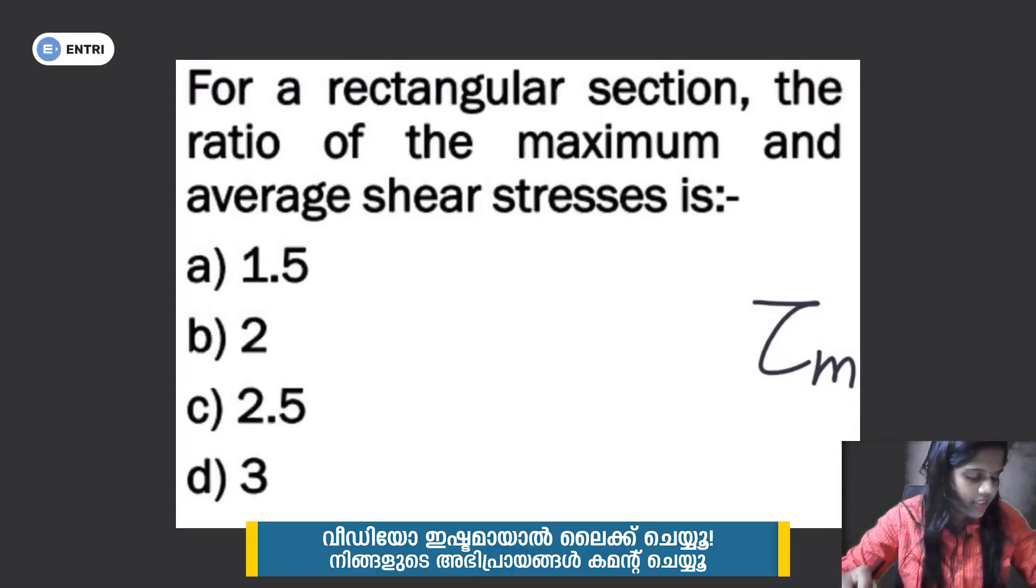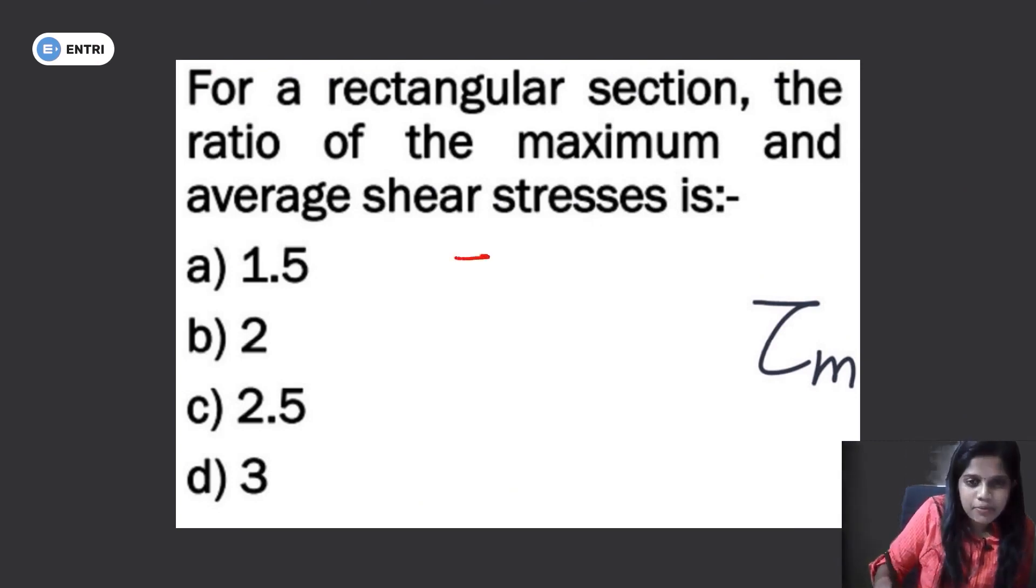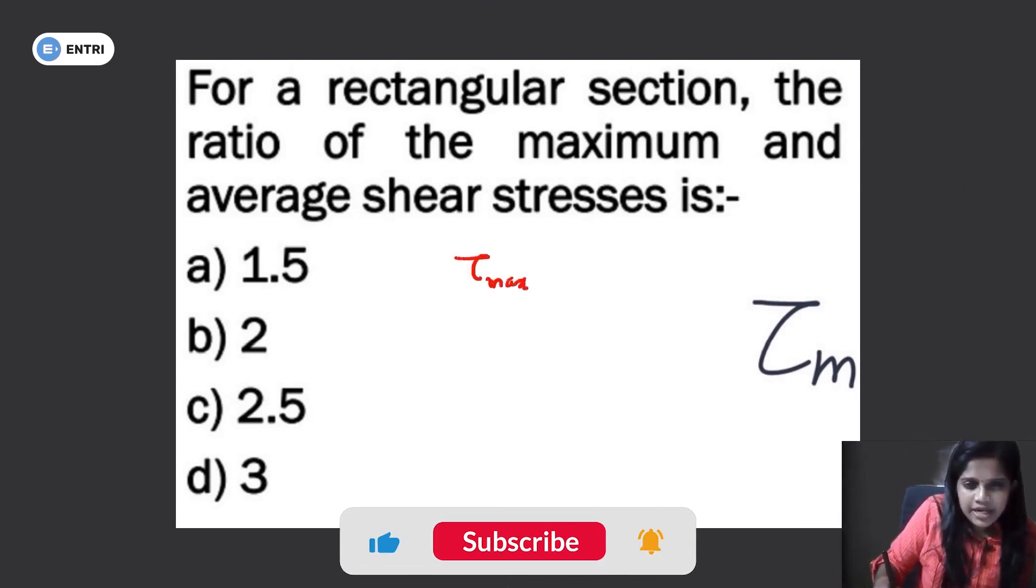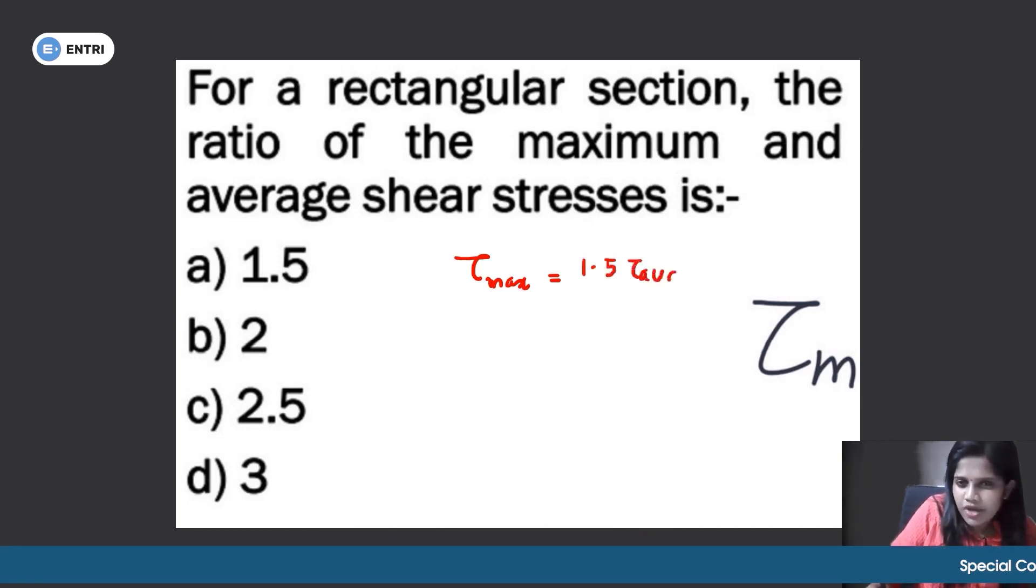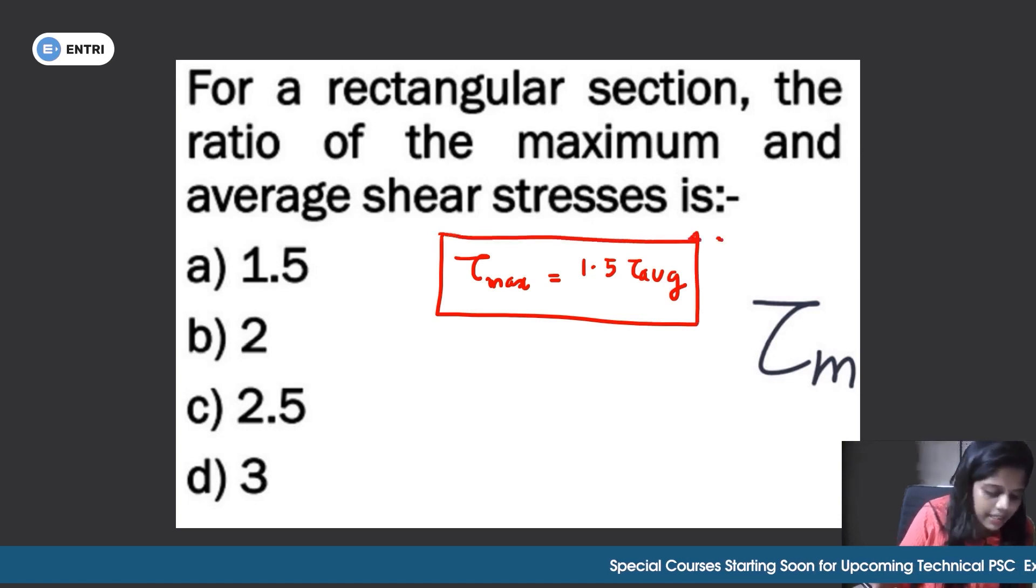For a rectangular section, the ratio of maximum stress to average stress - this is very important. Tau max is equal to 1.5 times tau average. Maximum shear stress to average stress is 1.5, or 3 by 2.